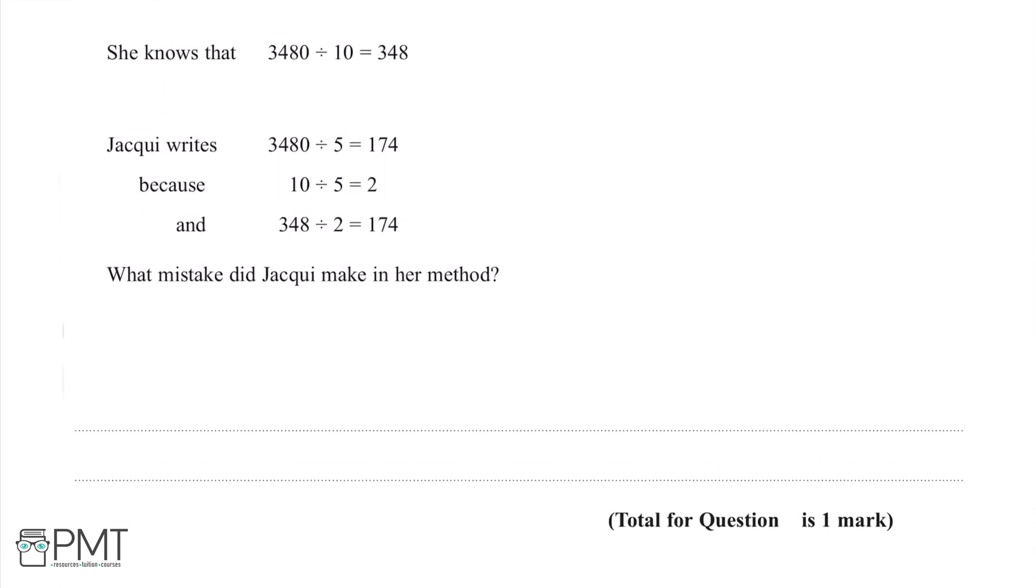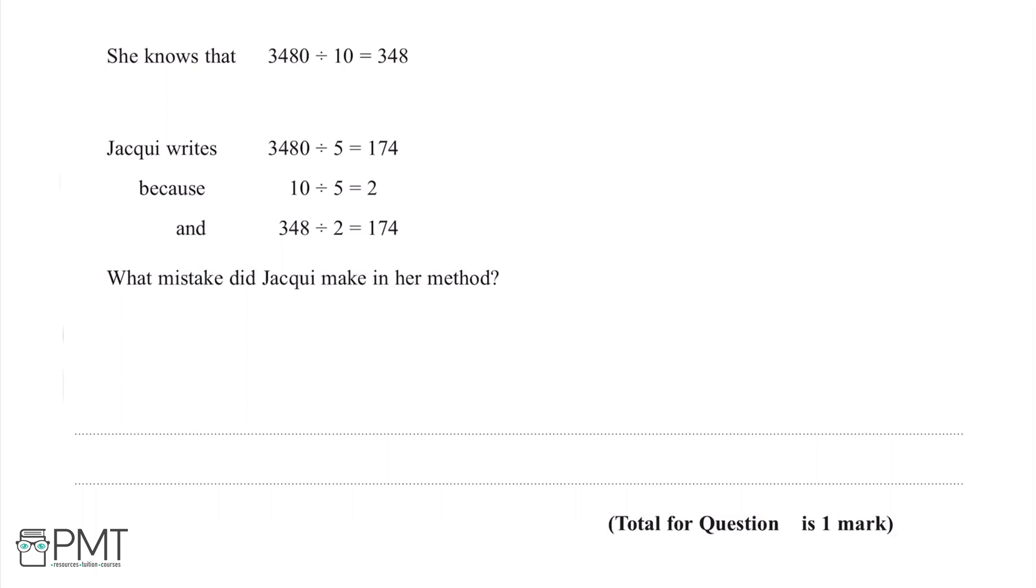So if we look at Jackie's method, her first step is 3480 divided by 10 equals 348. Now when we're dividing something by 10, we move the decimal point one to the left, which removes the zero. So we know that 3480 divided by 10 does equal 348. So if we move on to the second step...